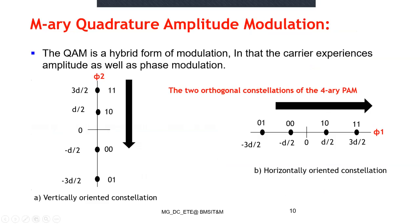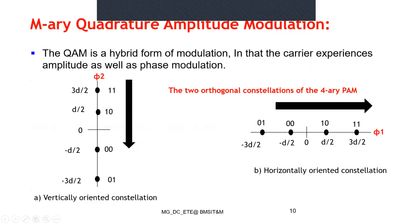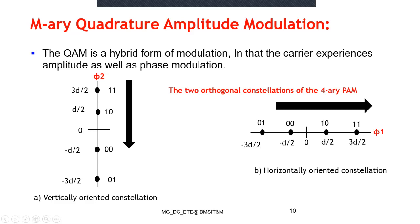This is the four-array PAM taken as horizontal and vertical. The procedure: the vertically oriented constellation uses the top-down approach, and the horizontally oriented constellation uses the left-to-right approach. For the first quadrant: 11, 10 combined with 10, 11. Second quadrant: this combination. Third quadrant: 00, 01 with 10, 11. Fourth quadrant: 00, 01 with 01, 00.